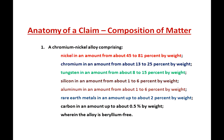This is the anatomy of a composition of matter claim — not one in our resources section, but one that gives you a clear idea of what a composition of matter is and how it's claimed. This example claims a chromium nickel alloy comprising nickel, a window of amounts of chromium, tungsten, silicon, aluminum, rare earth metals, and carbon in amounts, and wherein the alloy is beryllium free.